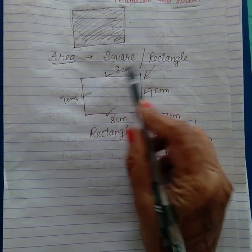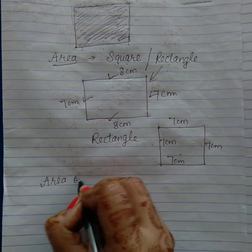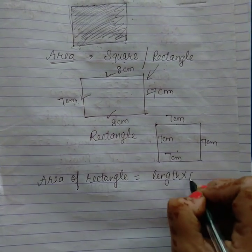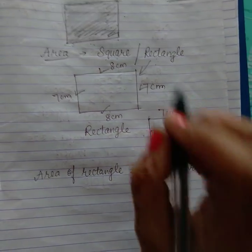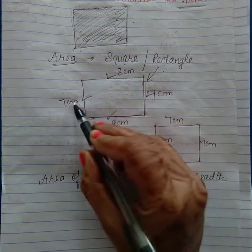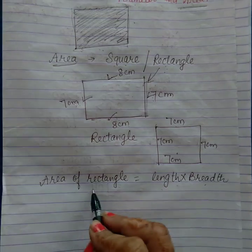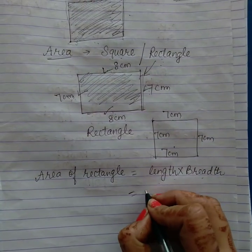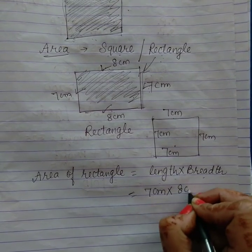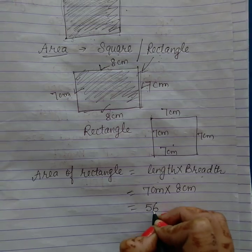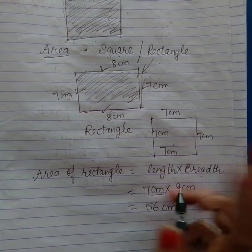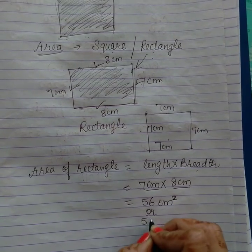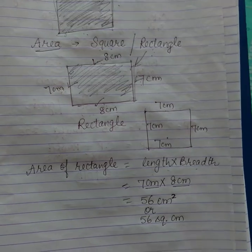अब हम calculate करेंगे — area of rectangle. Area of rectangle is equal to length into breadth. Length into breadth — क्योंकि rectangle की two different sides होती हैं, इसलिए हम two sides की multiplication करते हैं। So if length is 7 cm and breadth is 8 cm, then 7 × 8 = 56. यहाँ cm दोनों sides पर है, तो हम लिखेंगे 56 cm² — यानी 56 square centimeters.